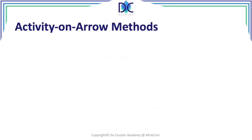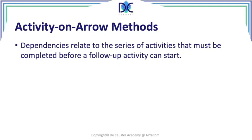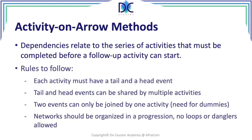When we look at the activity on arrow methods, we look at the different series of activities that must be completed before a follow-up activity can start. In the activity on arrow methods we have to take into account the following rules: every activity must have a tail and a head event — there is a start and a finish to every activity. Tail and head events can be shared by multiple activities. Two events can only be joined by one activity, and here we have the need for a dummy activity, because we can only have one activity linking two events, and in some cases we cannot represent the correct dependency relationships otherwise.